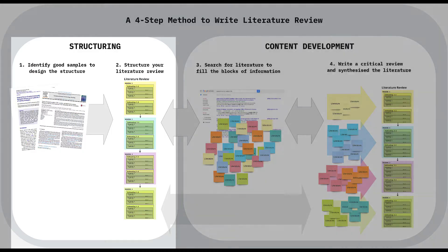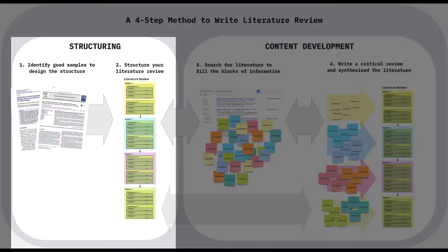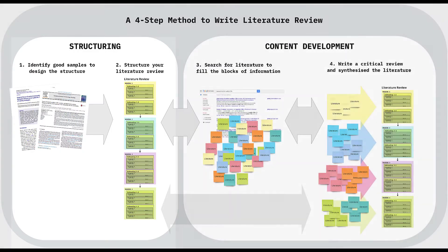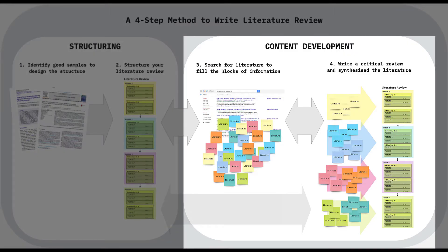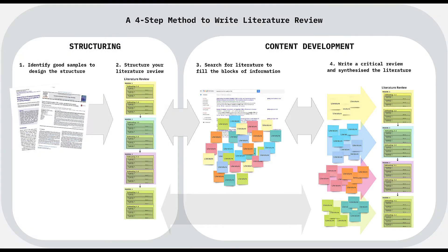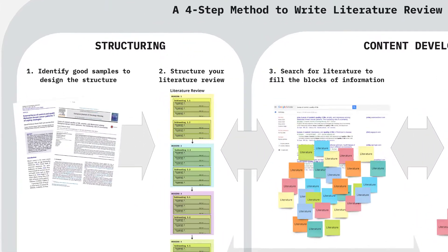The first two steps of this four-step approach, which I've named structuring, focus on organizing your literature review. And the next two steps, referred to as content development, cover the creation of necessary content for each section in the designed structure. This is an iterative process, so you may move forward and backward in this process to develop your literature review.